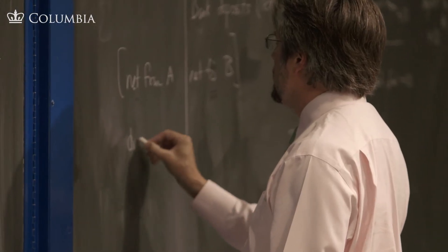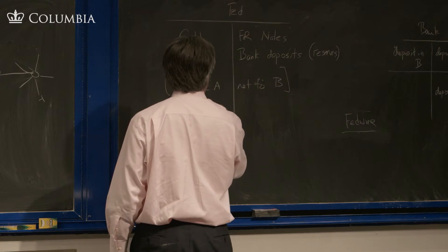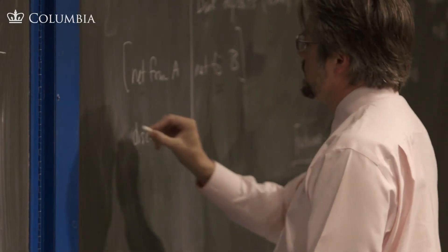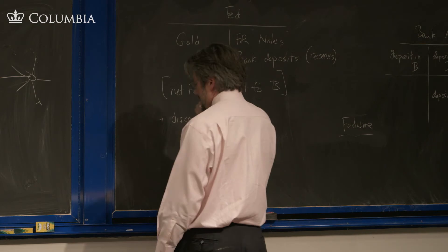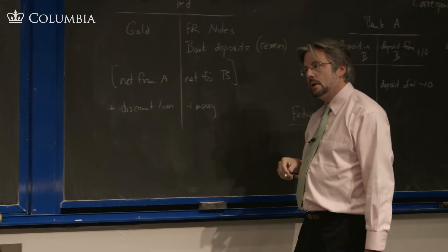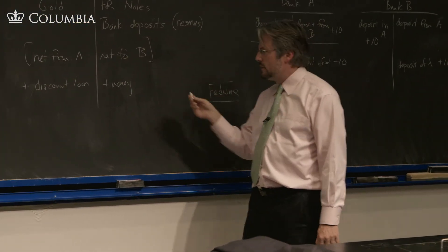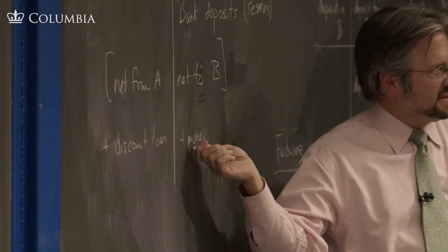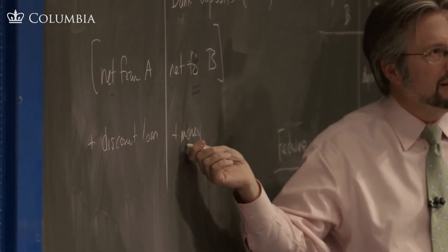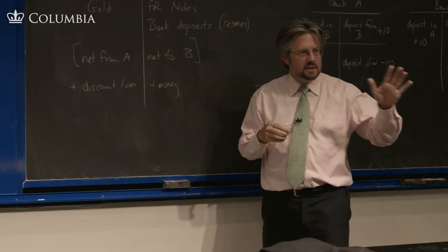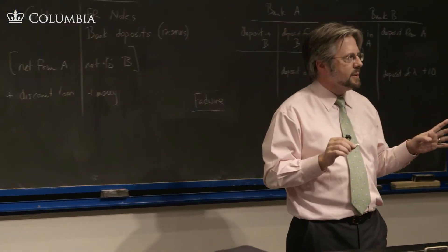So these are discount loans. By expanding its own balance sheet, the Fed will do this. And you can see this on the balance sheet of the Fed. Some of these little loans to troubled banks, you can see this on the balance sheet. They're not very large, typically. You're dealing with troubled banks.